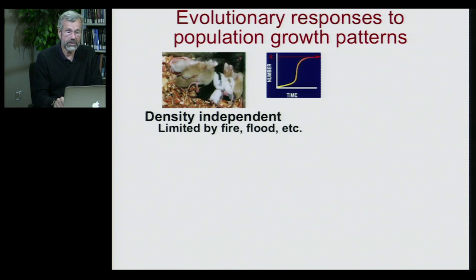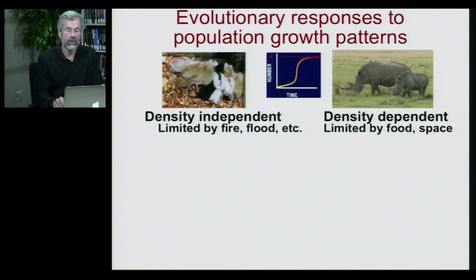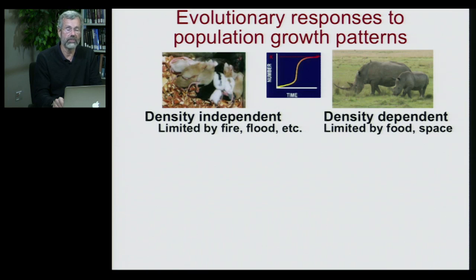Some species are subject to high levels of density-independent population factors — they may be limited by fire and flood. But other species are almost only affected by density-dependent factors. They're so close to the carrying capacity that they're limited by food and space. If these conditions persist for very long periods of time, we're going to see certain evolutionary adaptations.